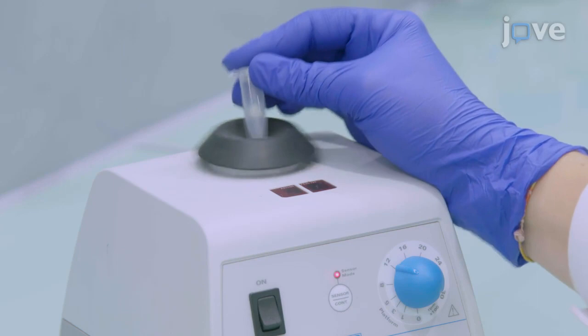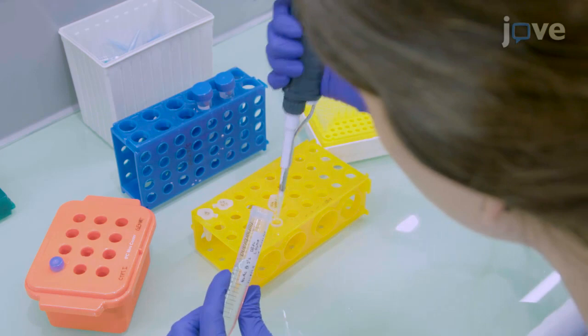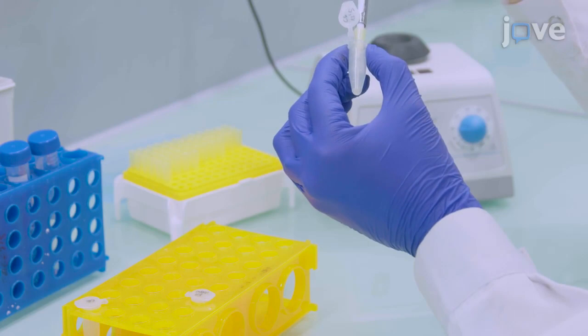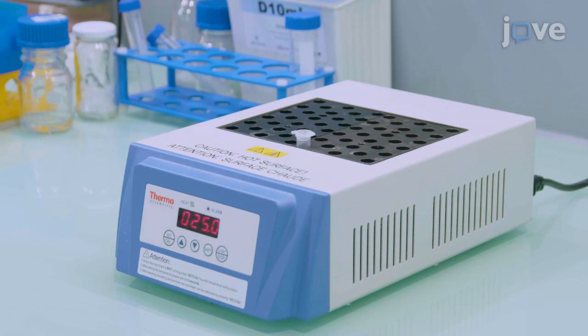Next, prepare mRNA at 0.5 milligrams per milliliter and mix by pipetting. Vortex the polymer solution again. Then mix the genetic material solution and the polymer solution in a 1 to 1 ratio in a microcentrifuge tube and incubate the tube at 25 degrees Celsius for 30 minutes in a thermoblock.